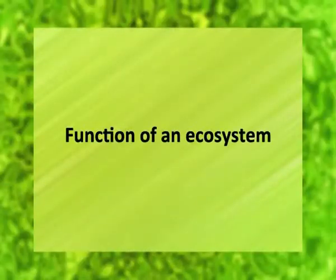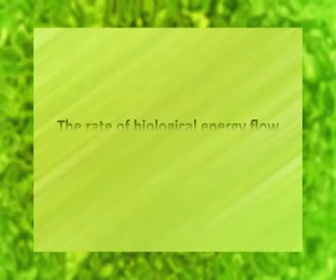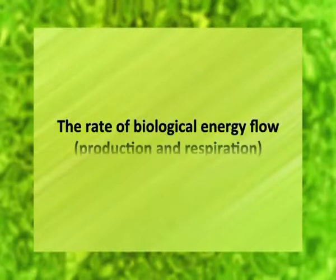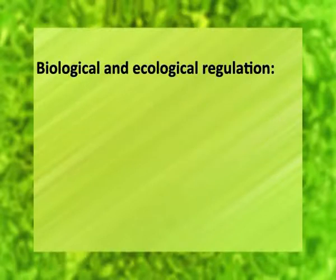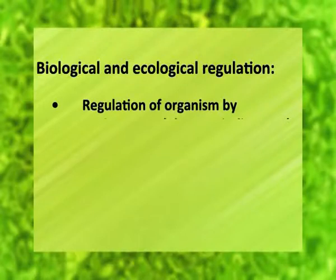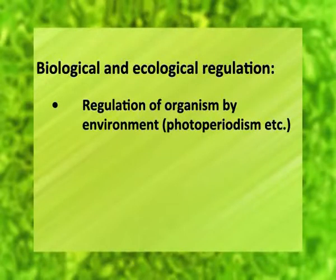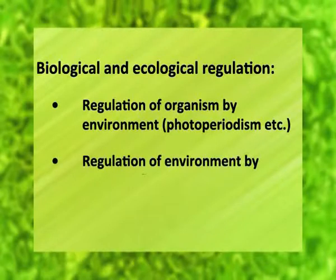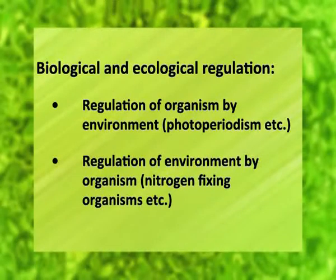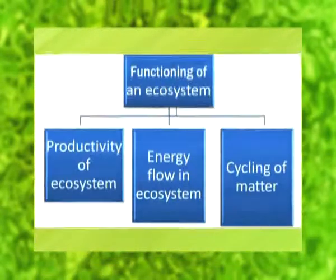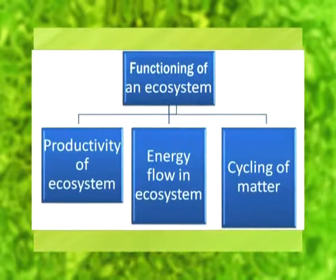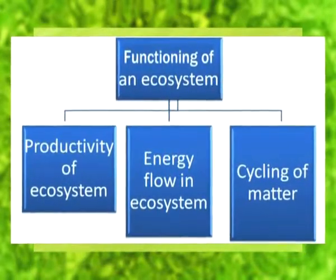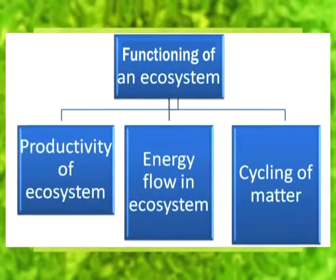Now, we will talk about the functioning of an ecosystem. By function, we mean the rate of biological energy flow — that is, the production and respiration rates of a community. Biological and ecological regulation, including both regulation of organisms by environment (that is called photoperiodism), and regulation of environment by organisms (that is, nitrogen-fixing organisms). Functioning of an ecosystem is subdivided into productivity, energy flow, and cycling of matter.